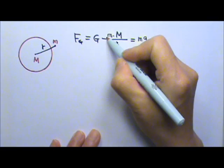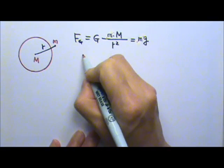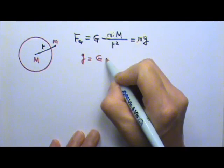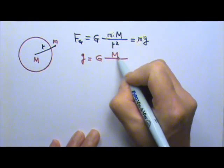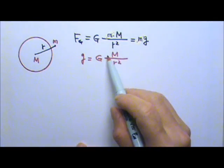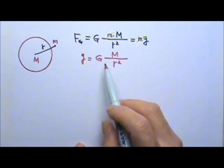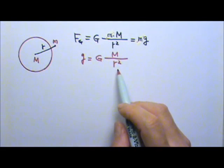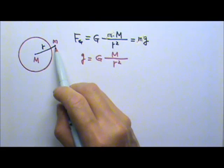If we cancel the little m, we get G, the gravitational acceleration equals to the big G times the big M over R squared. So if we know the mass of a planet, moon or sun, and the distance to the center, then we can find the gravitational acceleration at that location.